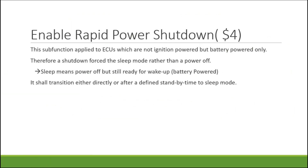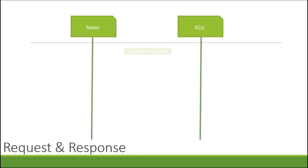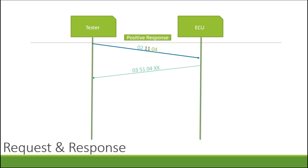Enable rapid power shutdown is only applicable when the ECU is directly connected to battery power. When you use this sub-function to switch off the ECU, it will move to sleep mode — meaning it will power off but still be ready for wake-up. It is a transition either directly or after a defined standby time to sleep. The positive response would be 0x02, 0x11, 0x04 and the response is 0x03, 0x51, 0x04. After the defined standby time, for example five seconds, the ECU will then reset.